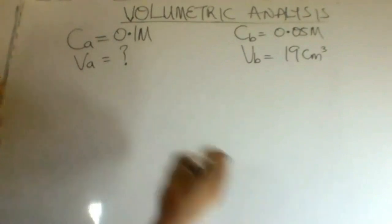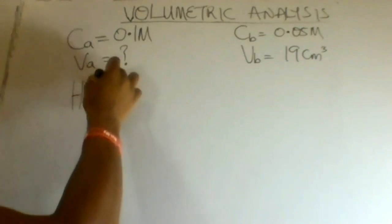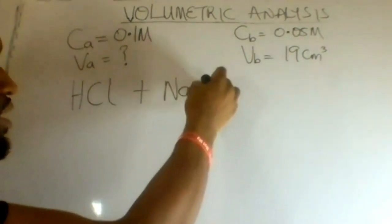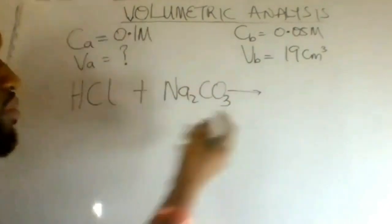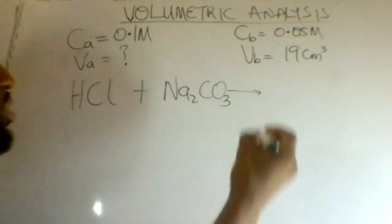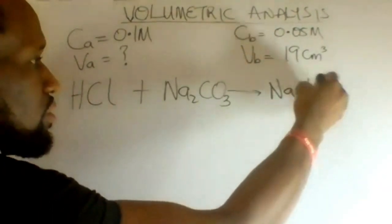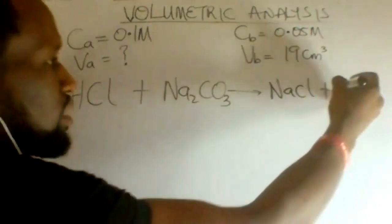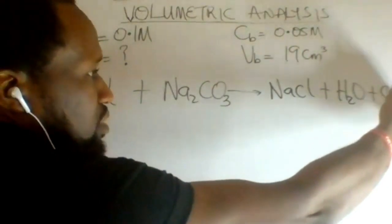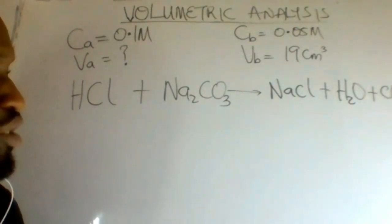The equation for the reaction is hydrochloric acid combining with sodium carbonate. This will produce sodium chloride, water, and carbon dioxide.